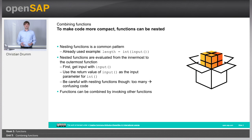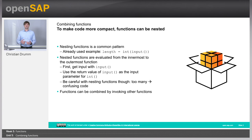We already used nesting quite a lot. If you remember this small code snippet on the slide, where we ask the user for input and then convert the input to an integer - that's something we already used throughout this course quite often. And this is actually already nesting functions. What happens when this code is evaluated? First, the input function is called. We get an input from the user. The user input is returned and given as an input parameter to the integer conversion function, which converts the user input to an integer.